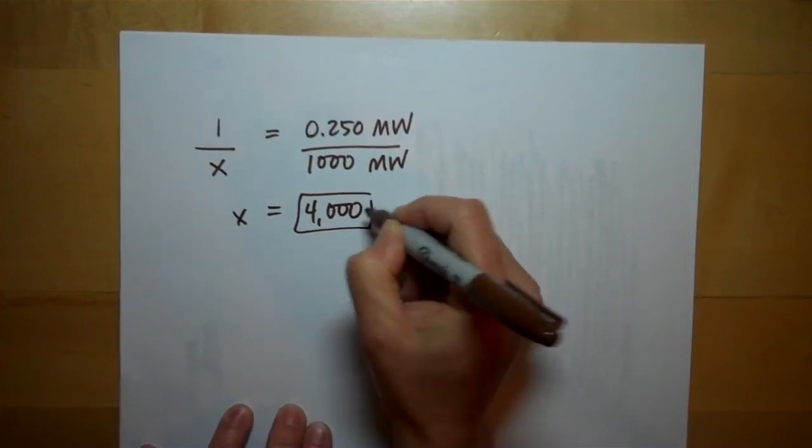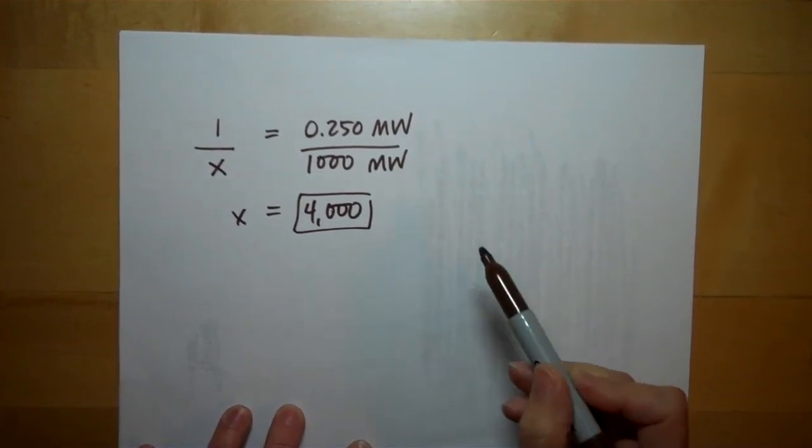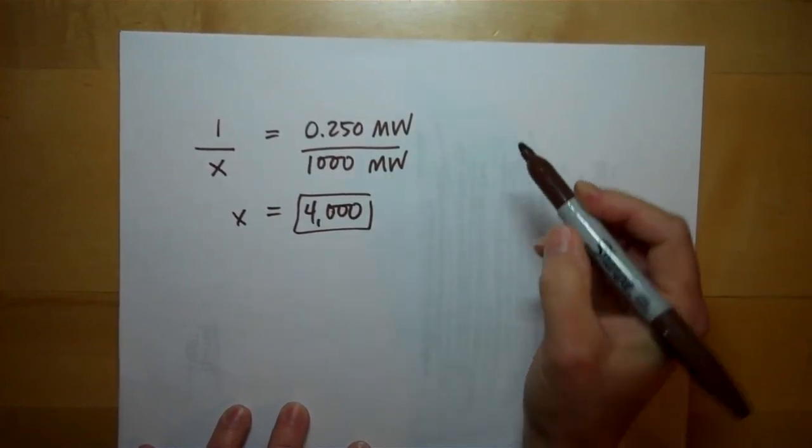So, you would need 4,000 wind turbines to produce the same amount of energy as that nuclear power plant.